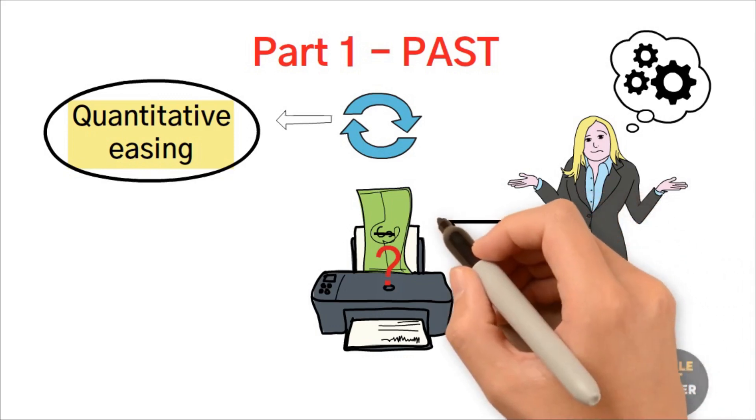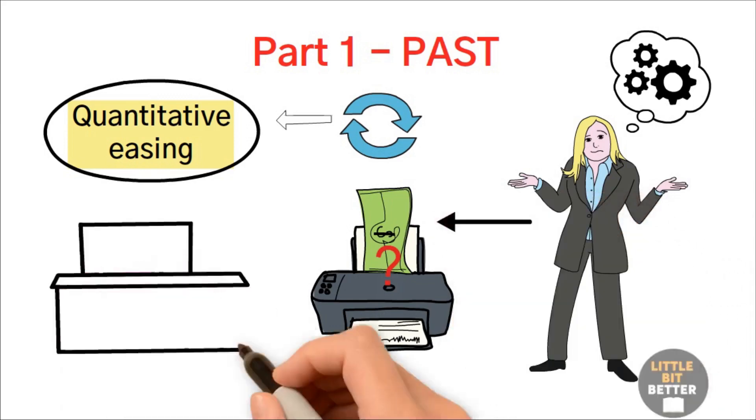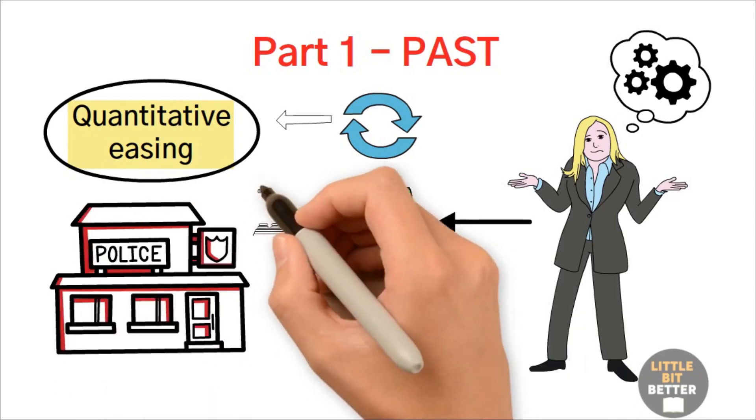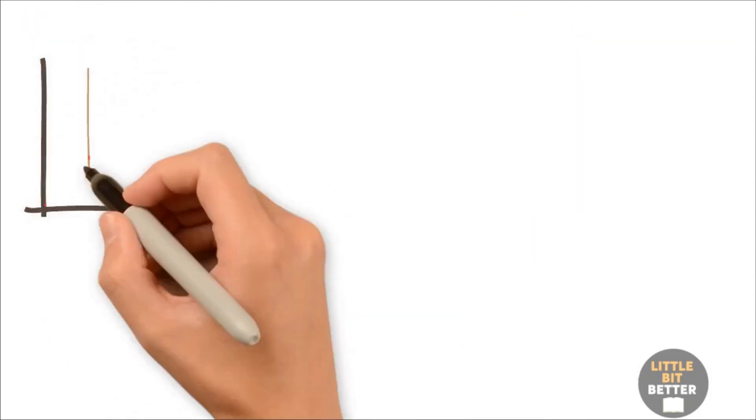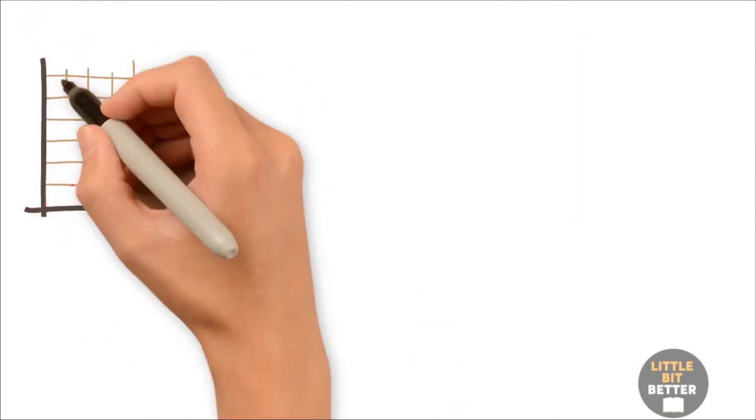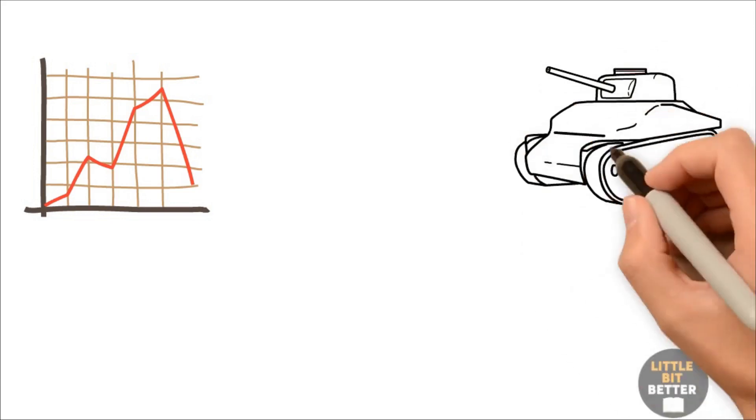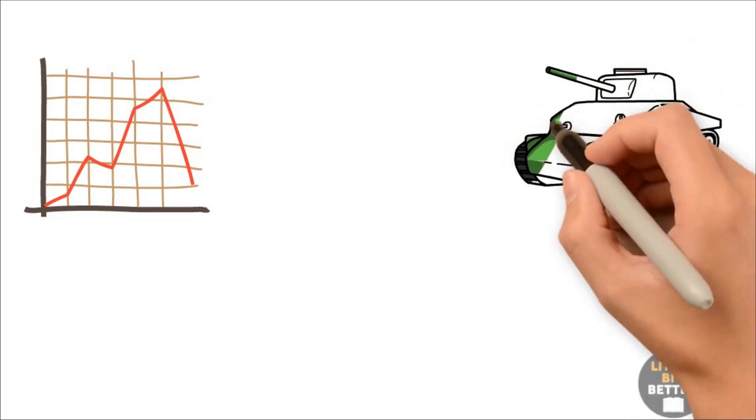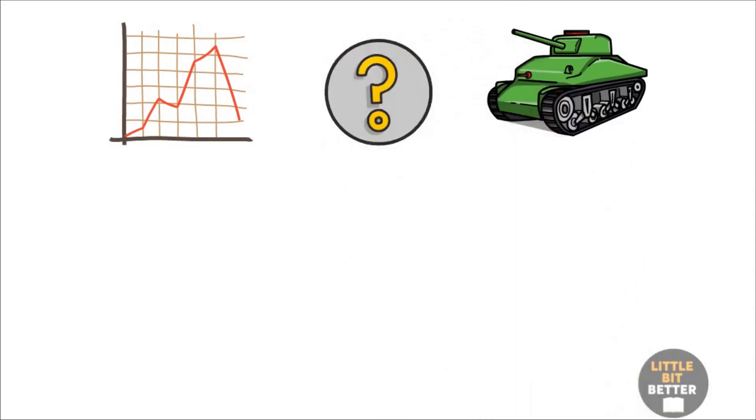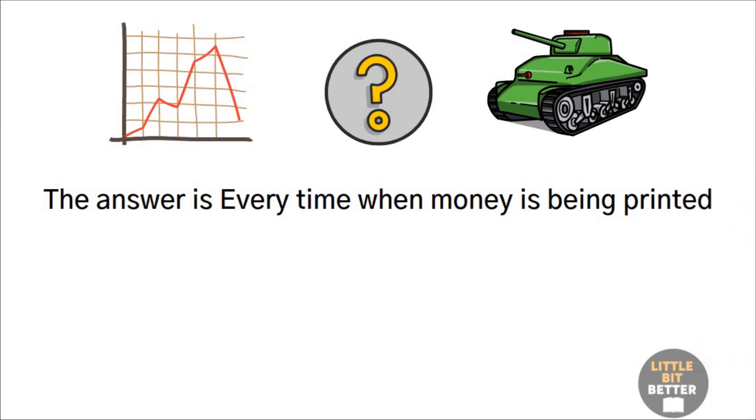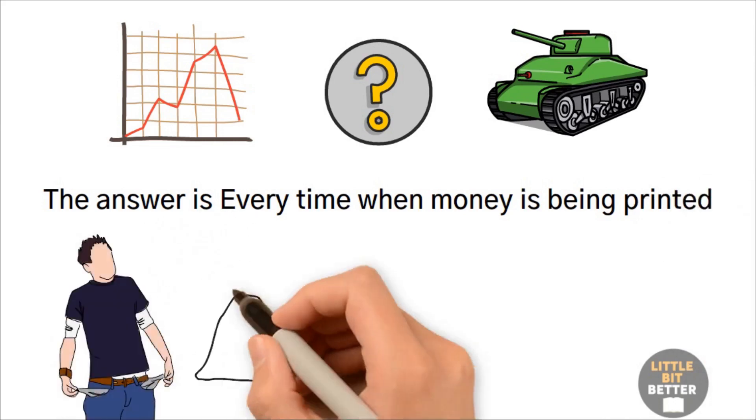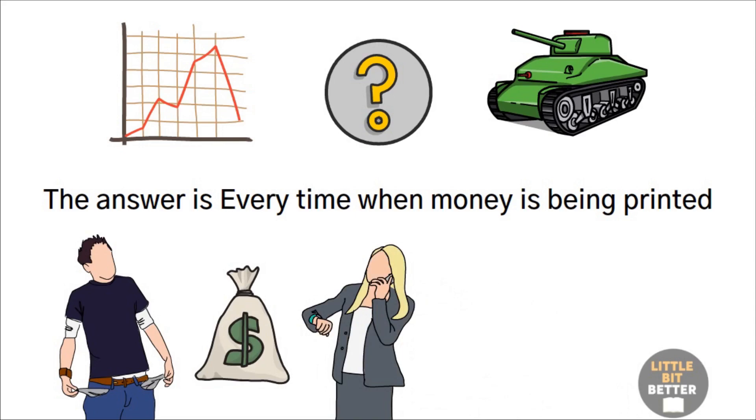If you get into financial trouble and decide to print money in your basement, then you would be arrested for that. However, government does a very similar thing, but no one says anything. Governments usually print money when they are in economic crisis or when money is needed for critical situations such as war. You might ask why printing money is bad. And the answer is every time when money is being printed, poor and middle class get even poorer, and rich get even richer. Printing money kills the value of the money, increases inflation and taxes.